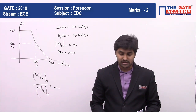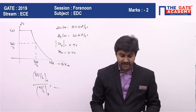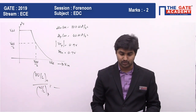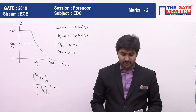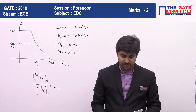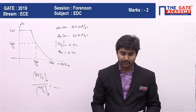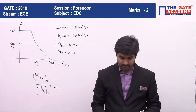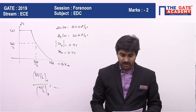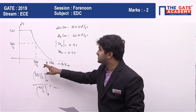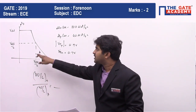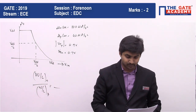A complementary MOS inverter has midpoint voltage VI equal to VDD by 2 as shown in the figure. VDD value is given as 3 volts. The CMOS is operating at a voltage of VDD by 2, and from the figure, when operating with input voltage of VDD by 2, the output voltage is also VDD by 2.